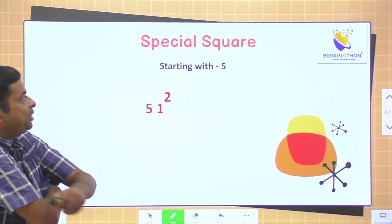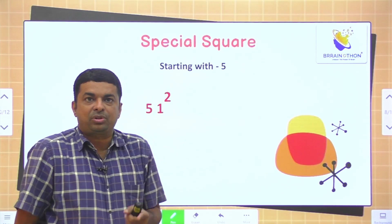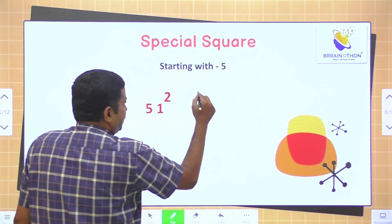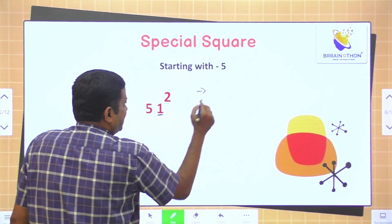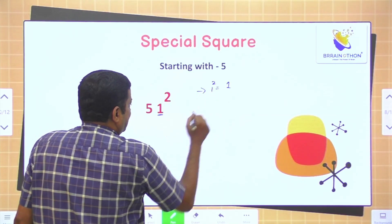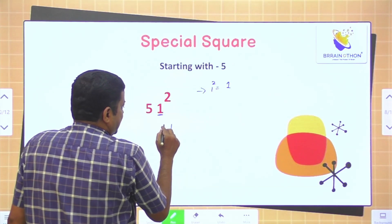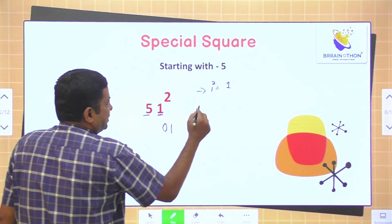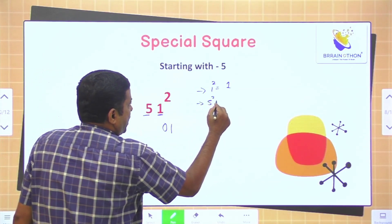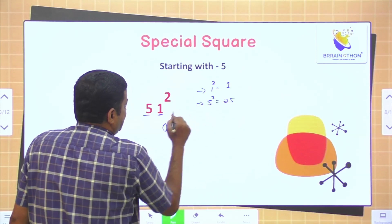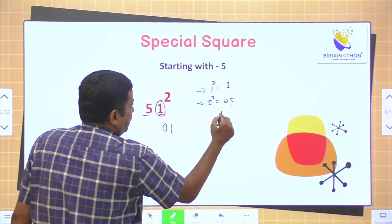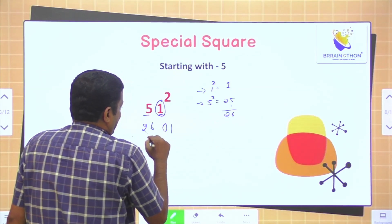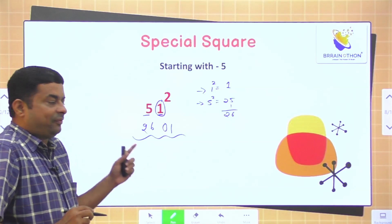One more sum. Now, starting with 5 — suppose you get any number that starts with 5, then what you need to do? First, take the square of the unit place. 1 square is 1, but we need a 2-digit number here, so we write 01. In the next step, find the square of 5: 5 square is 25. Then add the unit digit 1 to 25: 25 plus 1 is 26. So our final answer is 2601.